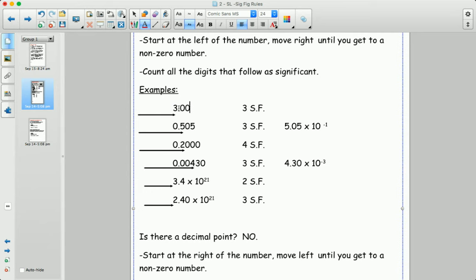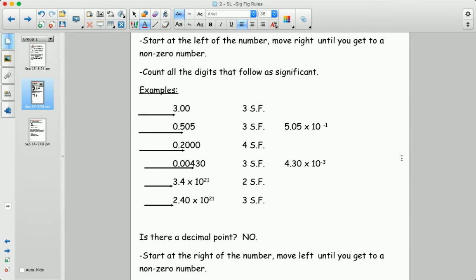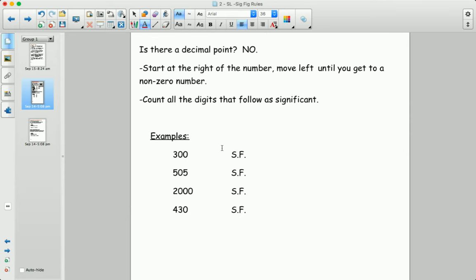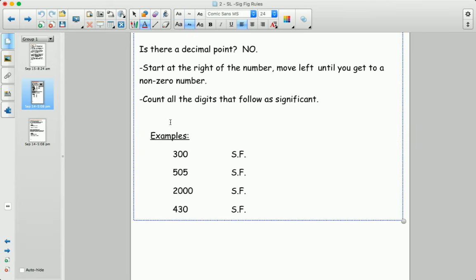So those extra zeros at the end are always going to matter. They give you information about precision. This second part doesn't come up as often on the IB exam, values without decimal points, but technically if a value doesn't have a decimal point then the way to do sig figs is to start on the right hand side